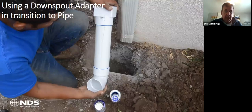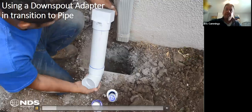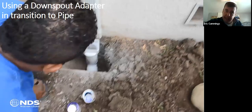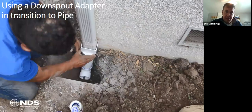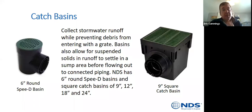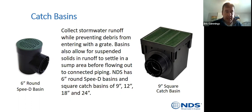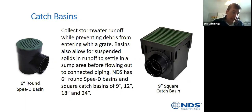Here's a video of installing a downspout adapter and transition to a pipe — pretty straightforward. NDS manufactures catch basins ranging from a six-inch round speedy basin all the way to a 24-inch square catch basin. We run anywhere from three-inch corrugated and sewer and drain pipe all the way up to 12-inch corrugated and smooth wall drain pipe to convey the water once it gets into these basins.